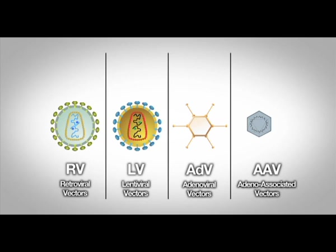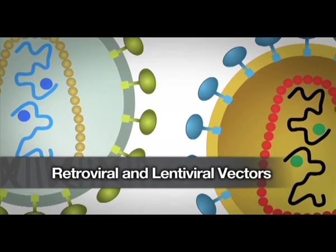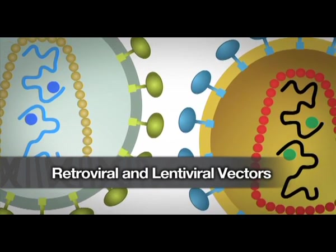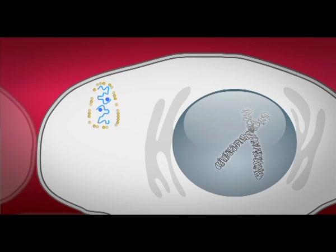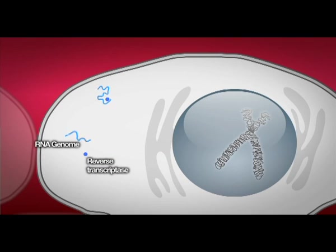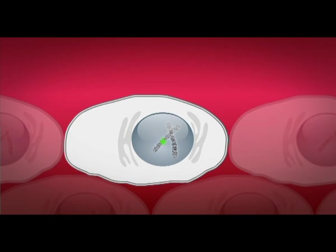Retroviral vectors and lentiviral vectors share common features as they both derive from retroviruses. The two have a similar structure based on an RNA genome. When a retroviral or lentiviral vector infects a target cell, the RNA genome containing the therapeutic gene is retrotranscribed to double-stranded DNA in the cytoplasm, through the action of reverse transcriptase enzyme carried by the vector. Once retrotranscribed, the DNA with the therapeutic gene enters the nucleus where it integrates into the host cell genome. When integrated into the genome, cells arising from the infected cell will also contain the therapeutic gene, allowing for stable and long-term expression.